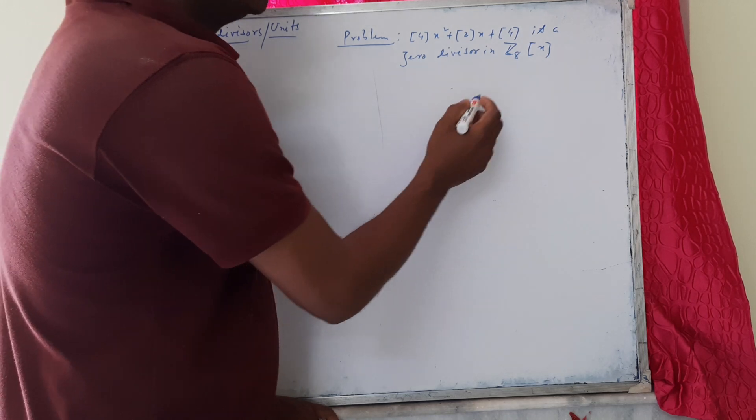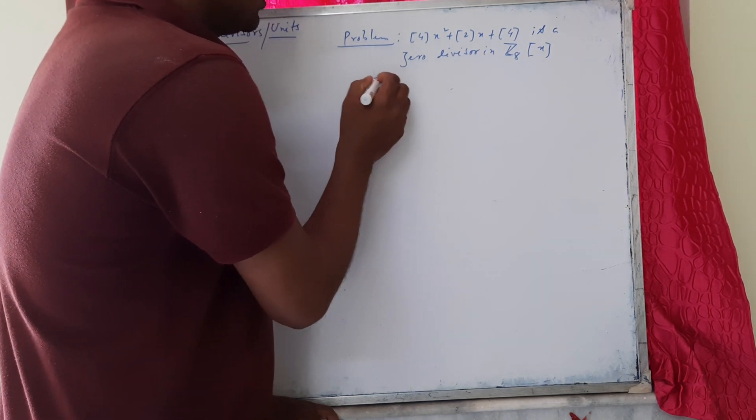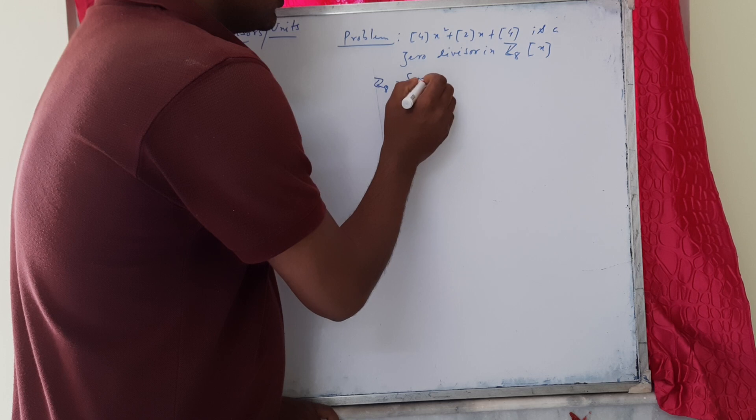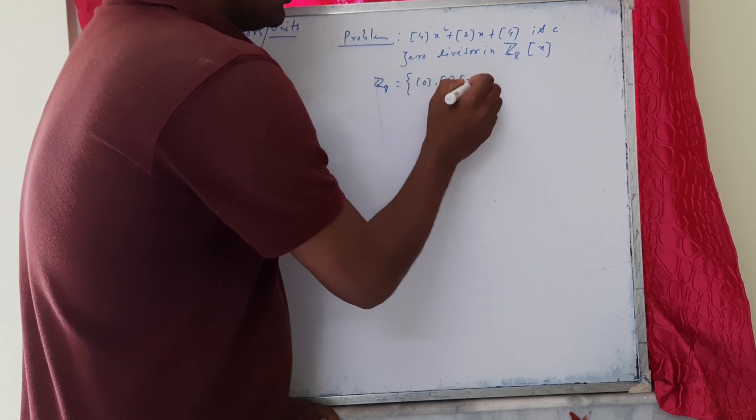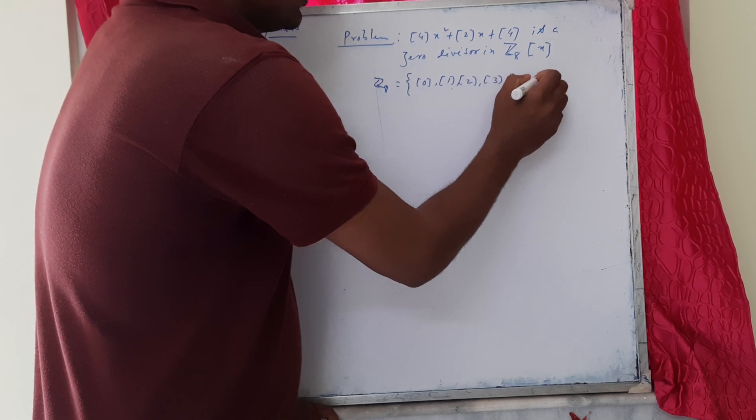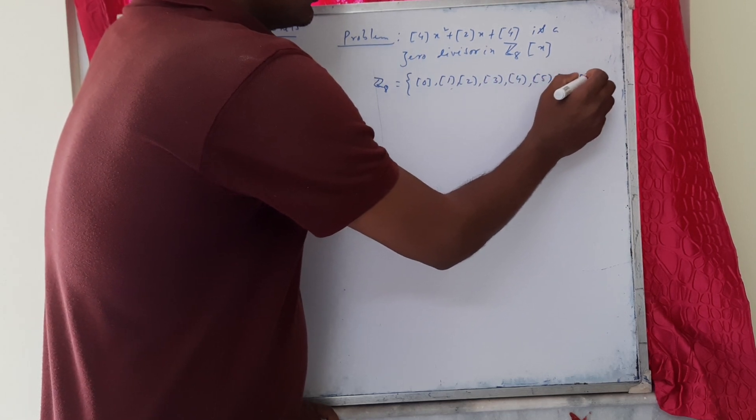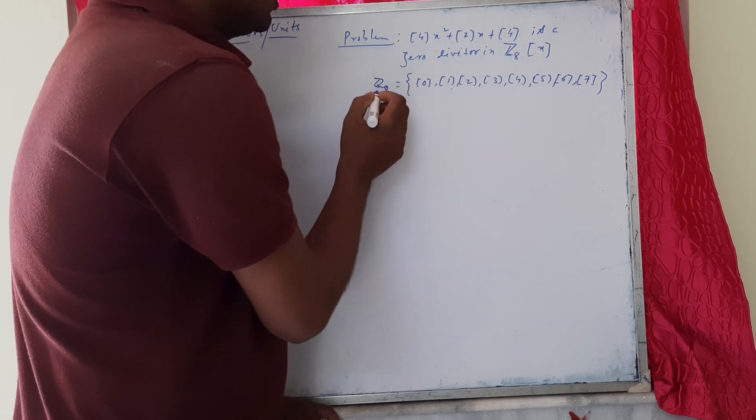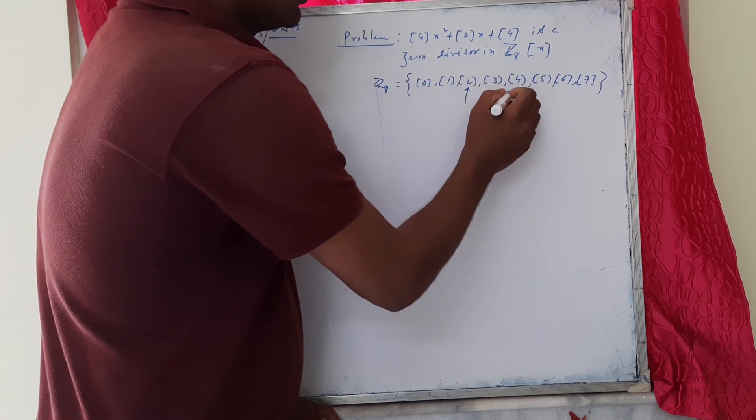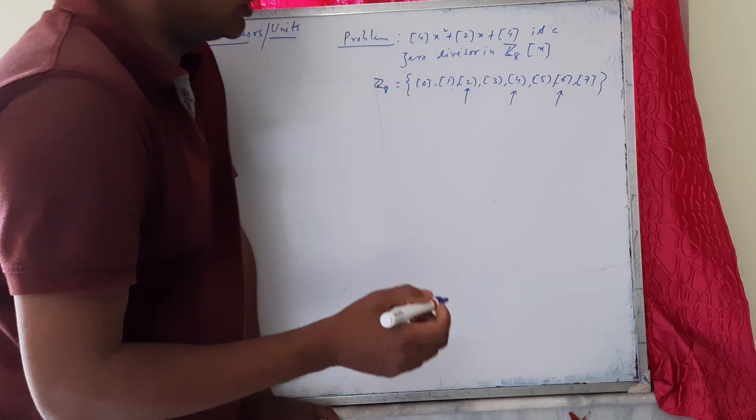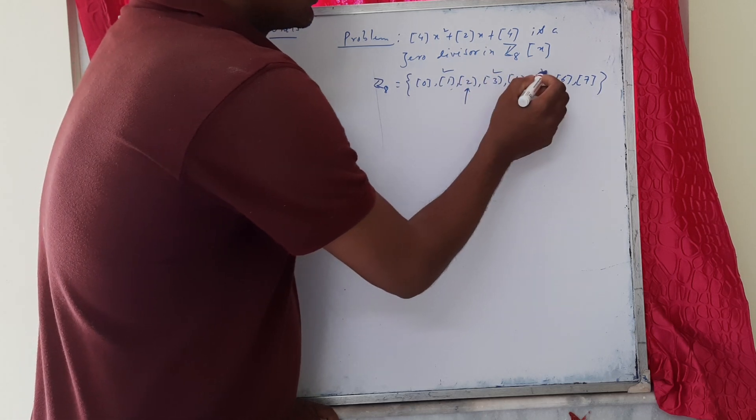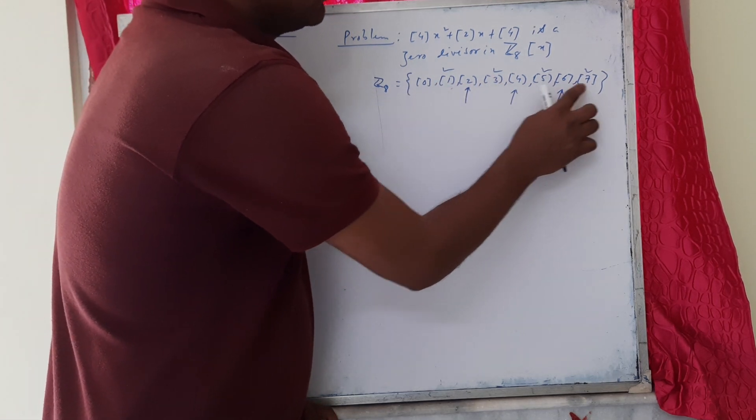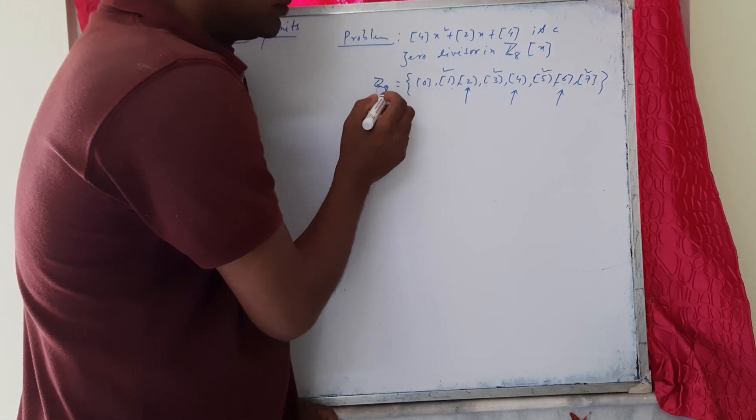First of all, we list all the elements of the ring Z₈. We see that the zero divisors in Z₈ are class 2, class 4, and class 6. Class 1, class 3, class 5, and class 7 are units in Z₈, as 1, 3, 5, and 7 are less than 8 and coprime to 8.